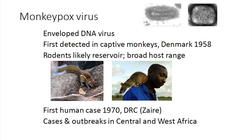It was first detected in captive monkeys being used for laboratory research imported from Africa — this was in Denmark in 1958. We believe rodents are the likely reservoir for enzootic transmission in affected African countries, and there's quite a broad host range in terms of mammalian species that are susceptible. Not all rodents are susceptible to infection, which is quite interesting in terms of identifying the reservoirs. Shown here are a rope squirrel and also a giant pouched Gambian rat.